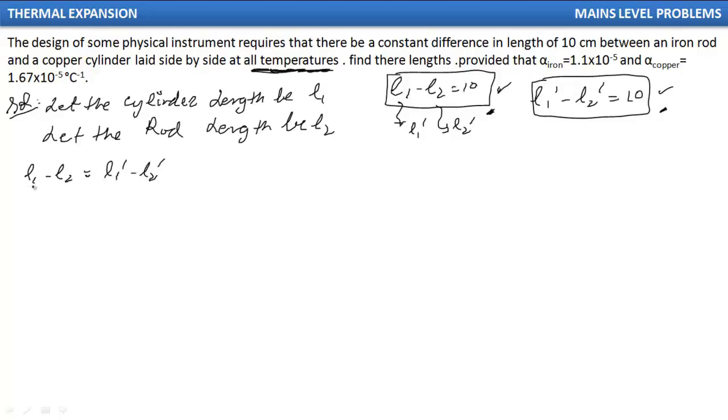Now L1 dash is my length of cylinder. L1 dash will be L1(1 + alpha copper × delta T). L2 dash is my iron rod's length at elevated temperature and that will be L2(1 + alpha iron × delta T). If I simplify this, I get L1 minus L2 equals L1 + L1 alpha copper delta T minus L2 minus L2 alpha iron delta T.